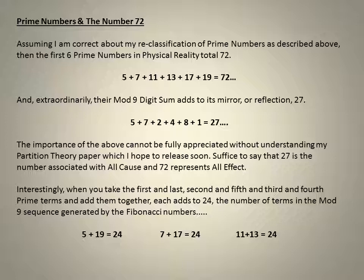The importance of the above cannot be fully appreciated without understanding my partition theory paper, which I hope to release soon. Suffice to say that 27 is the number associated with all cause, and 72 represents all effect. Interestingly, when you take the first and last, second and fifth and third and fourth prime terms and add them together, each adds to 24, the number of terms in the mod nine sequence generated by the Fibonacci numbers.